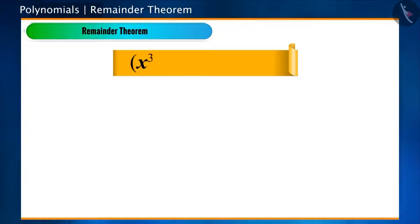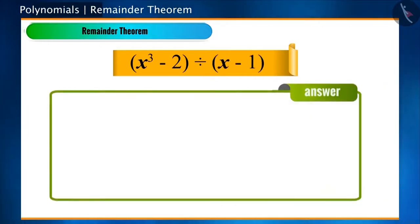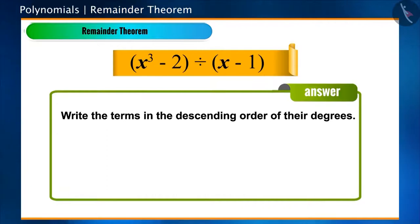Divide the polynomial x cube minus 2 by a linear polynomial x minus 1. What are we doing first? Let's write the polynomial in the descending order of its powers. Is the polynomial in descending order here? Yes.